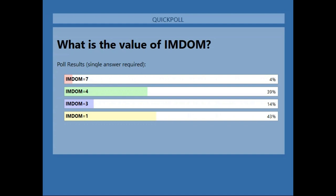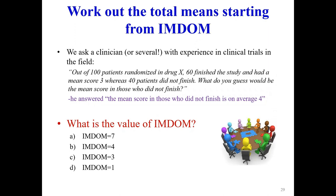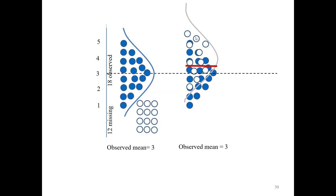43% of respondents correctly said the parameter equals 1, because the parameter is the difference between the missing and the observed. 39% said the parameter equals 4, confusing the average in the missing participants with the lambda parameter. Lambda is the difference between what happened in the missing participants and what happened in the observed participants. So IMDOM equals 1: the mean in the missing is the observed mean plus lambda.